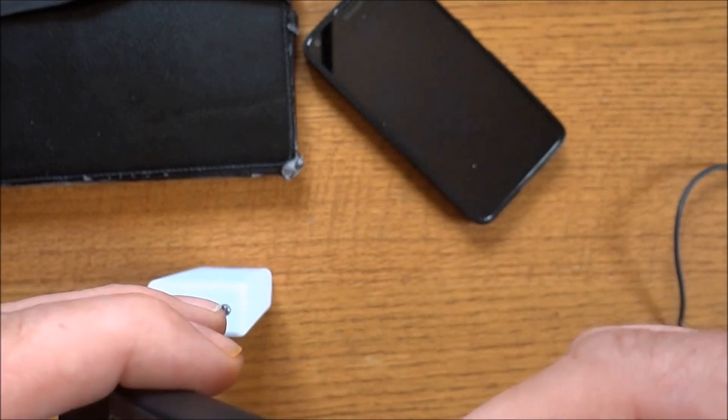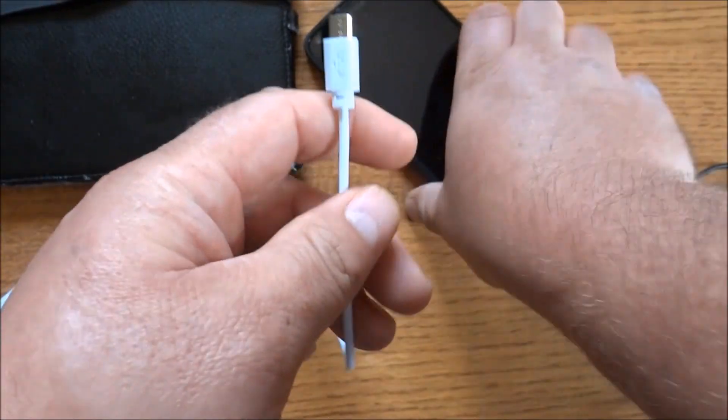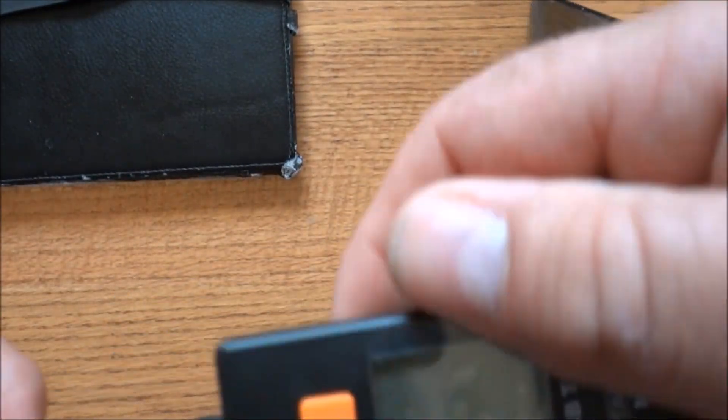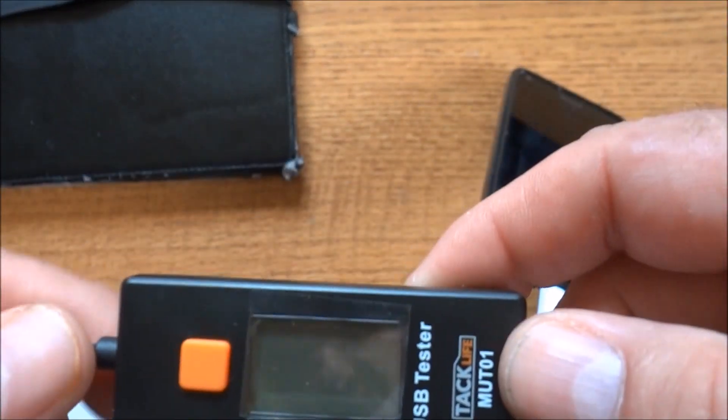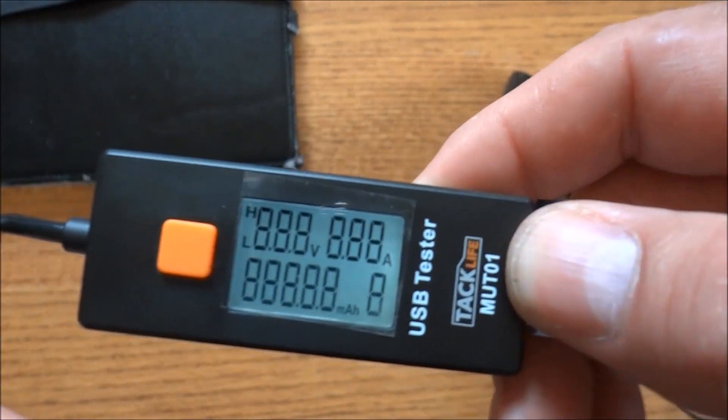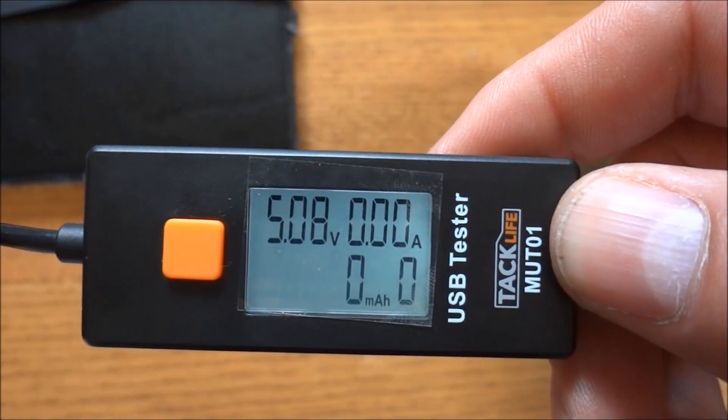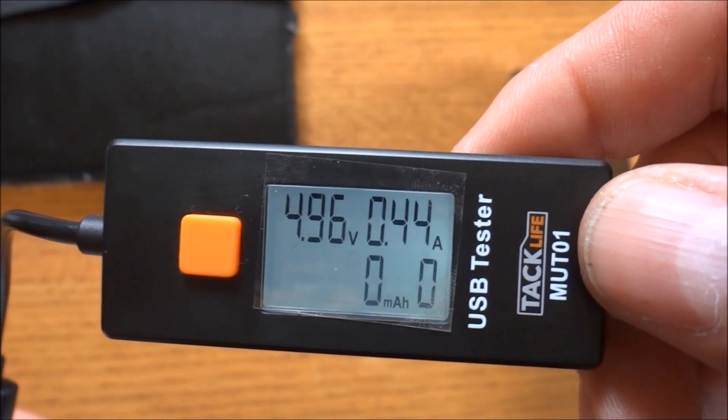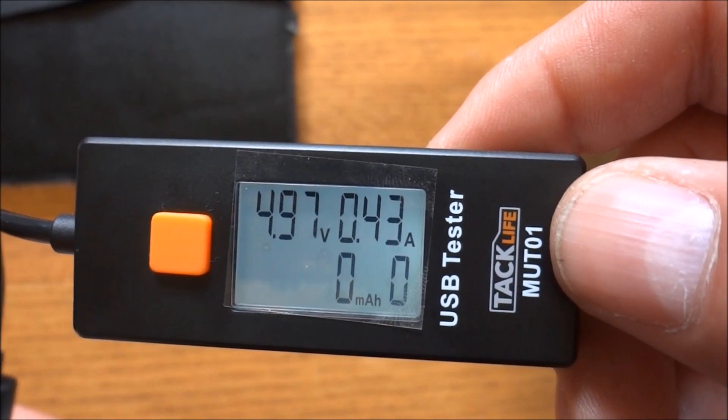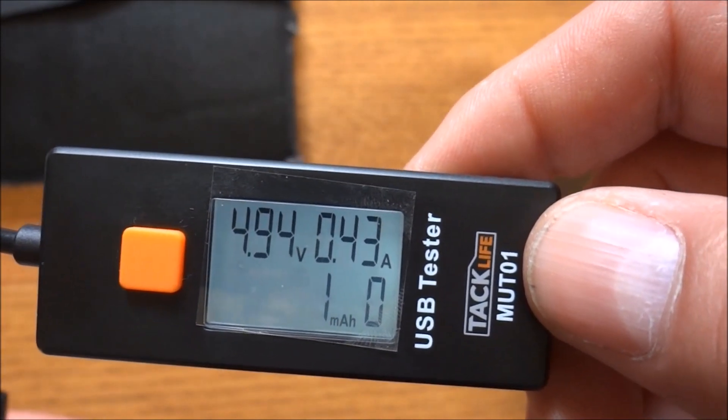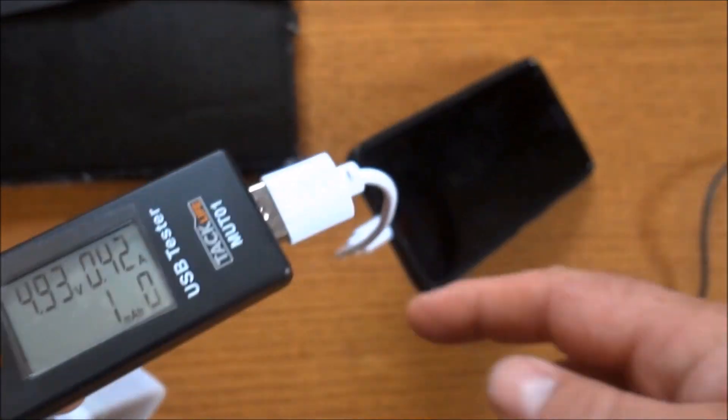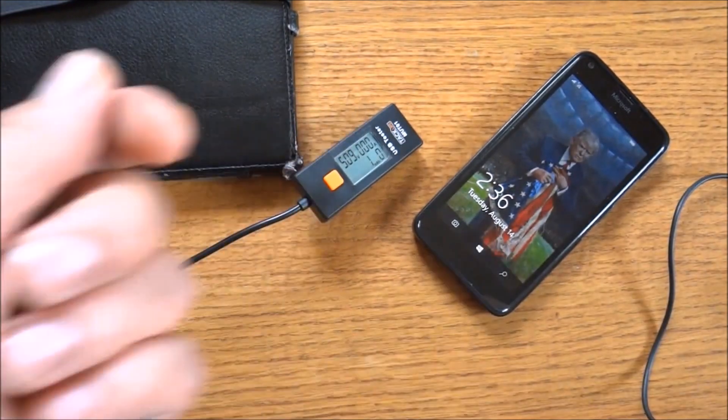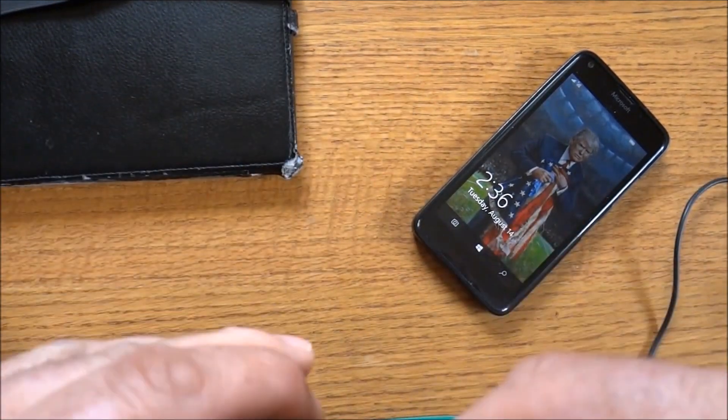The first thing I'm going to use is a short cable. First thing I'm going to do is plug it into my phone, and as you can see, my phone is drawing in 4.96 volts and 0.443 amps, and that's on the short cable.